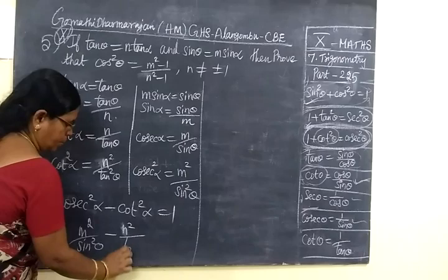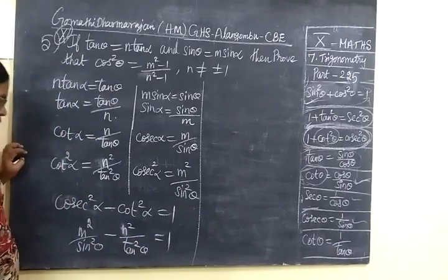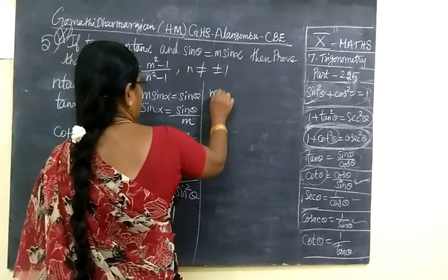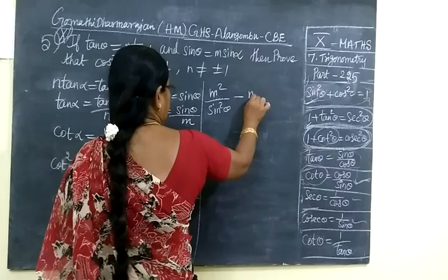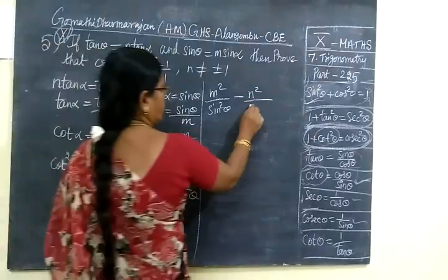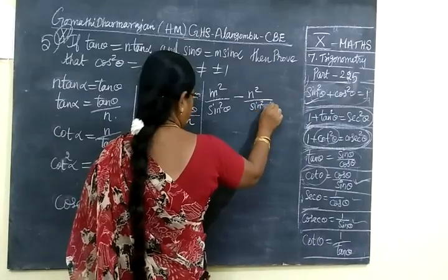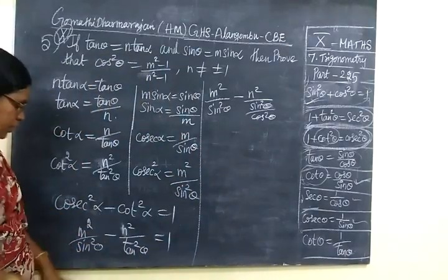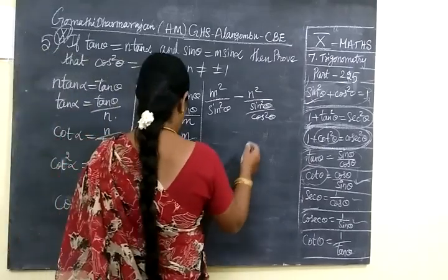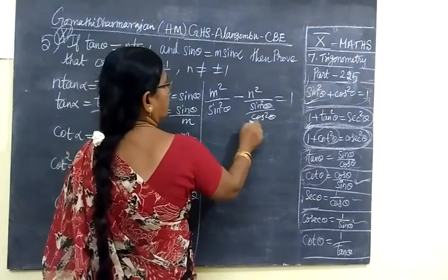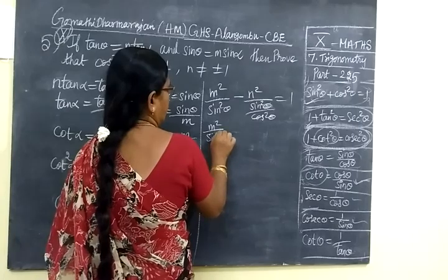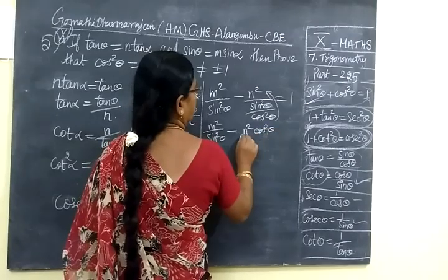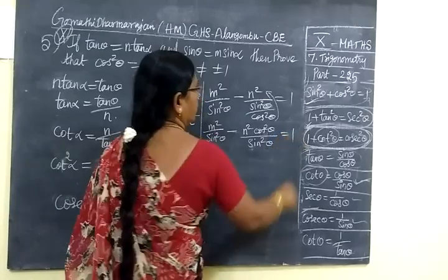Now, n²/tan²θ = 1. Take tan²θ as sin²θ/cos²θ. So n² times cos²θ/sin²θ. Then n² sin²θ minus sin²θ, this equals 1 in cos squared form. So n² cos²θ / sin²θ equals 1.